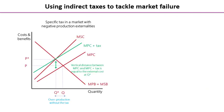Just a quick reminder: an externality is where there is an impact on a third party in a market. We're going to use indirect taxes to tackle negative effects. Remember, because indirect taxes reduce the quantity traded in a market and raise the price, we can use them to discourage behaviour and discourage purchase of goods and services that we do not want people to buy as much of.